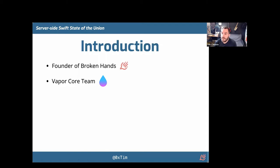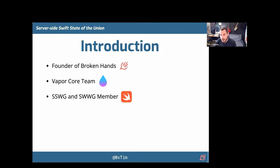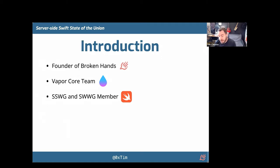I'm on the core team with Vapor, responsible for the maintenance and future of the framework, funding, distributing work. I sit on the SSWG — the Swift Server Work Group — and the newly announced SWWG, the Swift Website Work Group. The Swift Server Work Group is responsible for advocating the use of Swift on the server. The website work group is basically for improving Swift.org — we are all aware that it is a very 90s site.